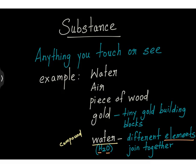A substance is just stuff — it could be anything you touch or see, for example water, air, a piece of wood, or gold. When you see gold, it is made up of tiny gold building blocks called elements.